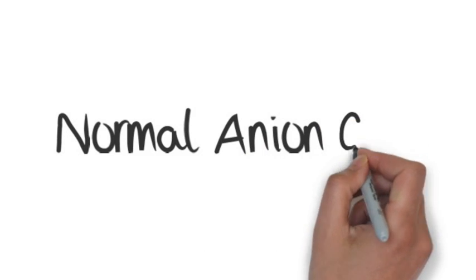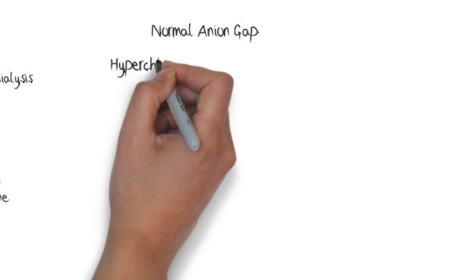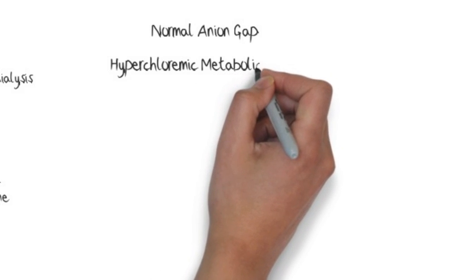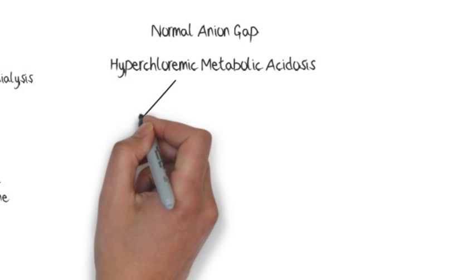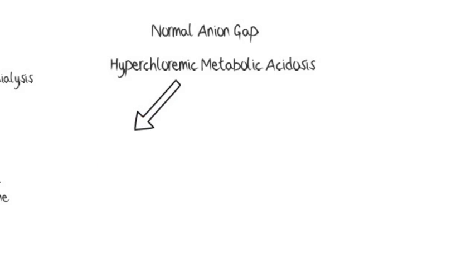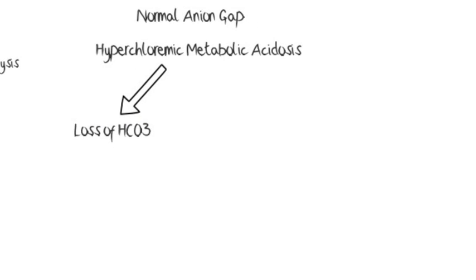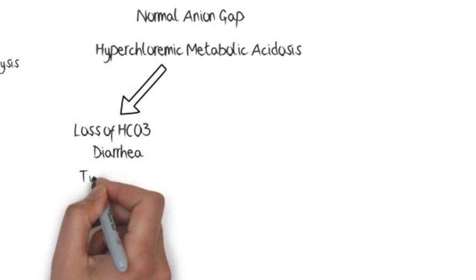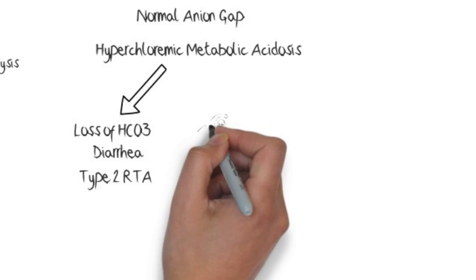If there is a normal anion gap metabolic acidosis, chloride is usually elevated — hence it is also called hyperchloremic metabolic acidosis. The causes are broadly divided into loss of bicarb and decreased renal acid secretion. Causes of bicarb loss include diarrhea and type 2 RTA.